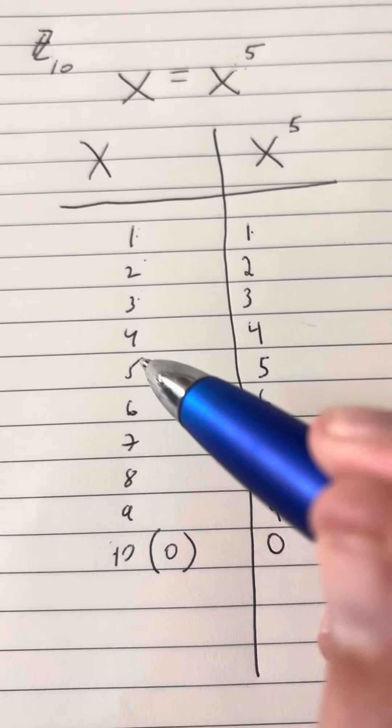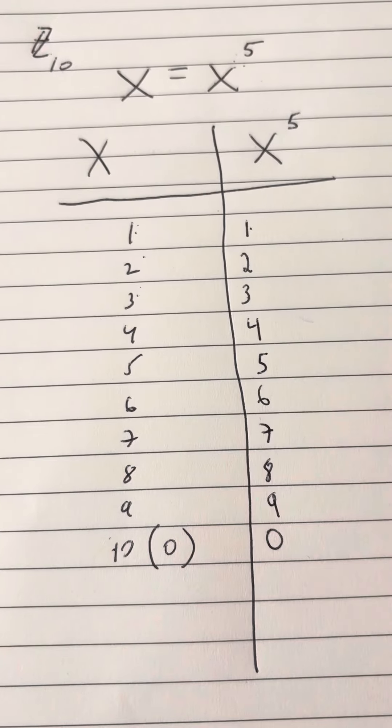So what happens here is that every single number in this set Z10 from 1 to 10 works. So it works for every single number in the set. Isn't that pretty cool?